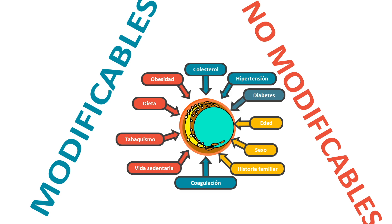Pero hay otras que te tocaron. Si genéticamente estás más predispuesto porque tu familia siempre ha sido de tener infartos e ictus por alguna alteración genética, eso no lo puedes cambiar. La edad tampoco. Y el sexo, da igual que te hagas una operación de cambio de sexo, el riesgo es inherente. Las cosas que no podemos modificar, no nos preocupamos; las que sí, ahí es donde tenemos que ocuparnos.